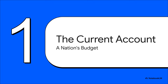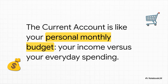The first major part of this report is called the current account, and this part is all about the day-to-day, short-term stuff. The easiest way to wrap your head around this is to compare it to your own personal finances. Your paycheck is your income, and then you've got your expenses — groceries, rent, going out. The current account is doing the exact same thing, just for an entire nation.